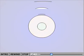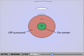Retinal ganglion cells have two basic types of receptive fields: on-center, off-surround, and off-center, on-surround. The center and its surround are always antagonistic and tend to cancel each other's activity.